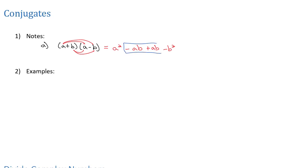Well, these center terms, negative ab and positive ab, go to zero, which means we're just left with squaring the first term, subtracting, and squaring the last term. These things that have a sum and a difference in them are called conjugates.